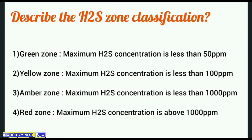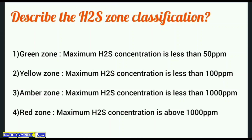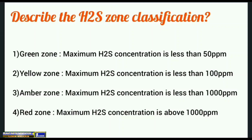Describe the H2S zone classification. 1. Green zone: maximum H2S concentration is less than 50 ppm. 2. Yellow zone: maximum H2S concentration is less than 100 ppm. 3. Amber zone: maximum H2S concentration is less than 1000 ppm. 4. Red zone.